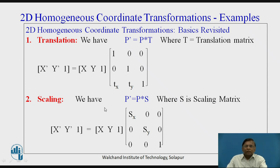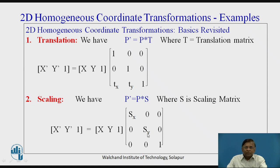Coming to scaling, we know the relation: p-dash, the new point, equals p, the original point, into S, where S is the scaling matrix. The scaling matrix in this case has diagonal elements S_x and S_y, and the third row and third column form the augmented part, where this is p-dash and this is p.